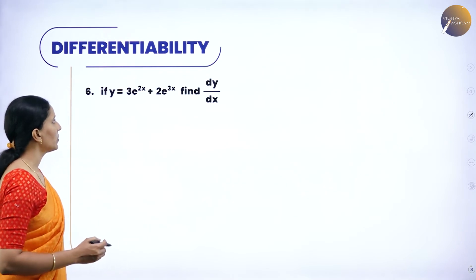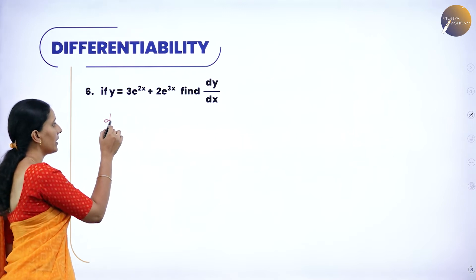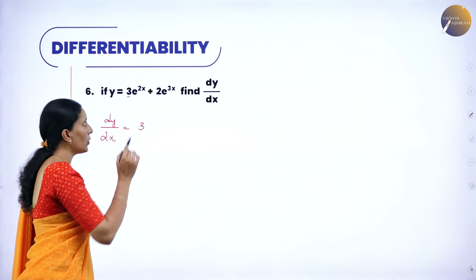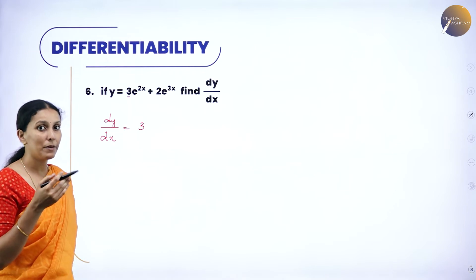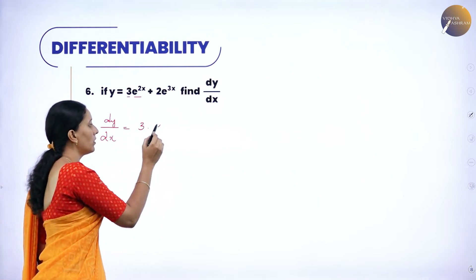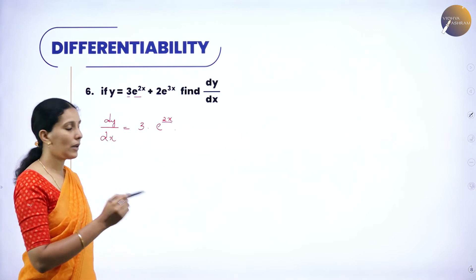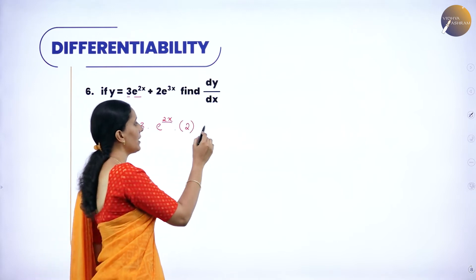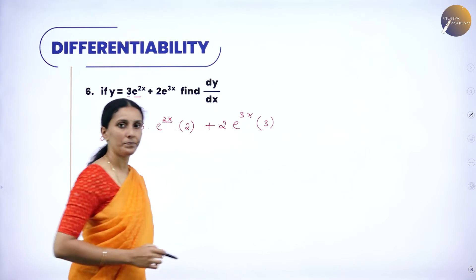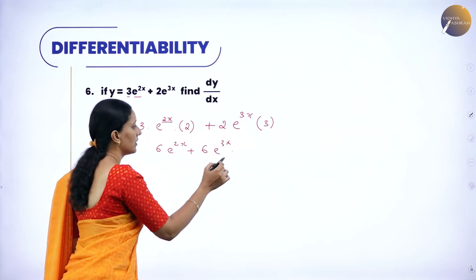If y = 3e^(2x) + 2e^(3x), find dy/dx. Any constant with the function write as it is. So dy/dx: 3 times derivative of e^(2x) — derivative of e^(2x) is e^(2x), but again differentiate 2x, which gives 2. Similarly, 2 times derivative of e^(3x) is e^(3x), and differentiating 3x gives 3. So multiplying, we get 6e^(2x) + 6e^(3x).